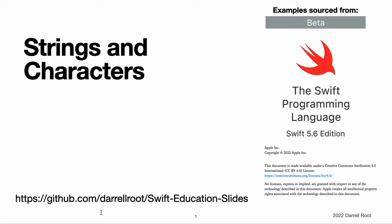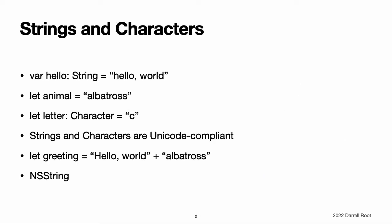Strings and Characters. A string is a series of characters, such as "Hello World" or "Albatross". Swift strings are represented by the String type. The contents of a string can be accessed in various ways, including as a collection of character values. Swift's String and Character types provide a fast, Unicode-compliant way to work with text in your code. The syntax for string creation and manipulation is lightweight and readable, with a string literal syntax that is similar to C.